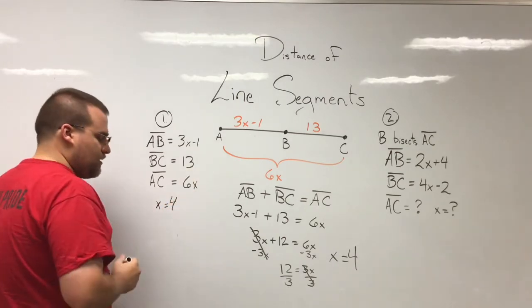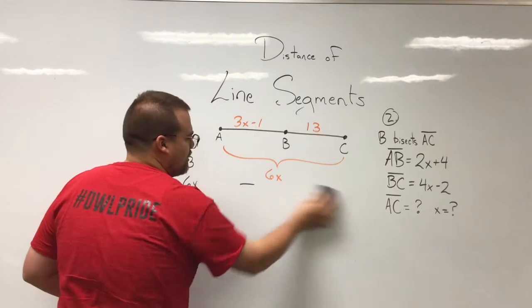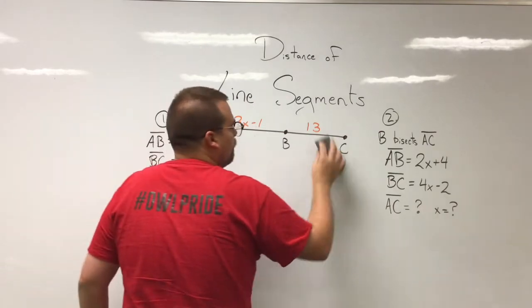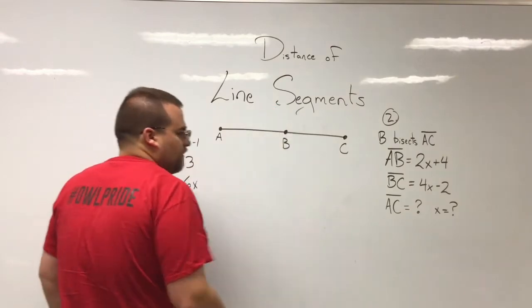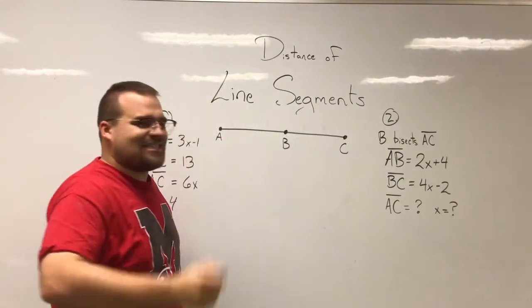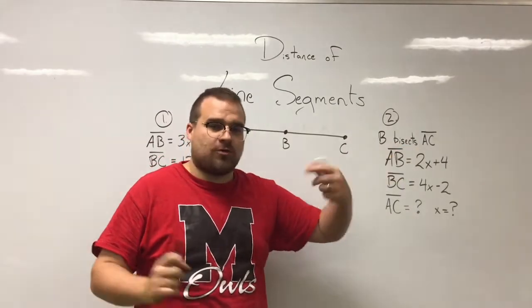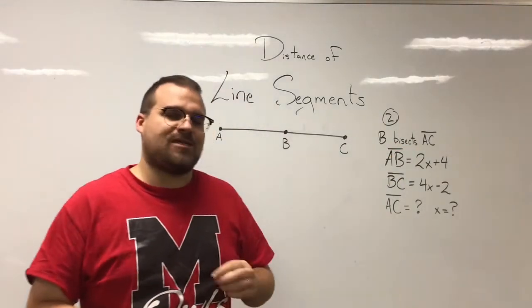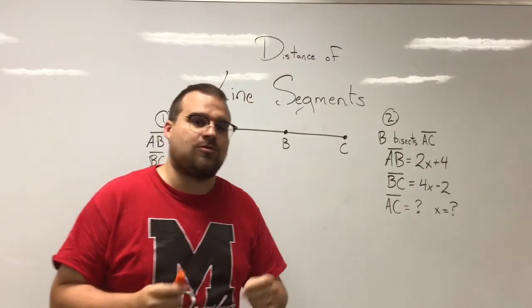All right, so that's number one. Let's go ahead and take a look at the second problem that I have up here. Let me erase this and get it out of the way. So problem number two starts off with an important bit of information: B bisects AC. Now let's remember that that verb there, bisect, means the same thing as B is a midpoint. It cuts it into two equal halves, so we know right off the bat these are equal to each other.